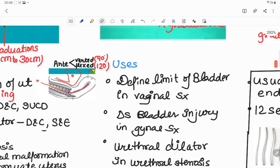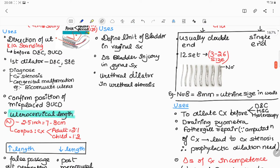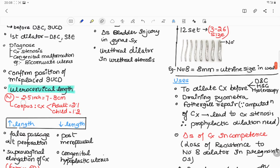For example, we have to introduce this uterine sound in a pen-like fashion holding between thumb and index fingers and take it out. From the tip till the marking where it is stained by blood or mucus. Normal uterocervical length is 2.5 inches or 7 to 8 centimeters.